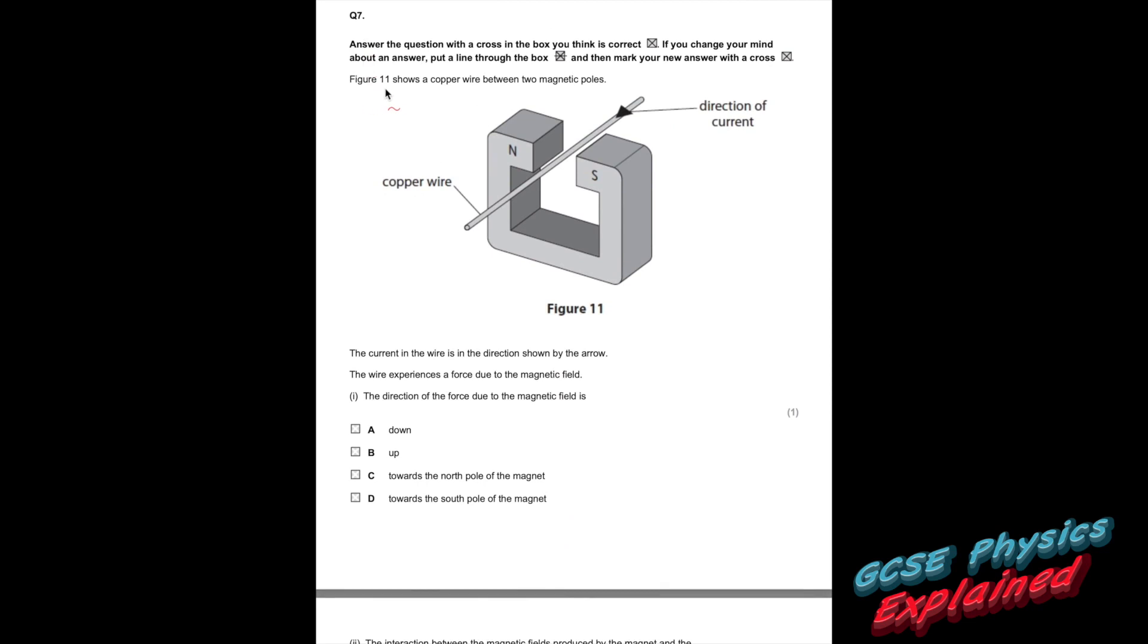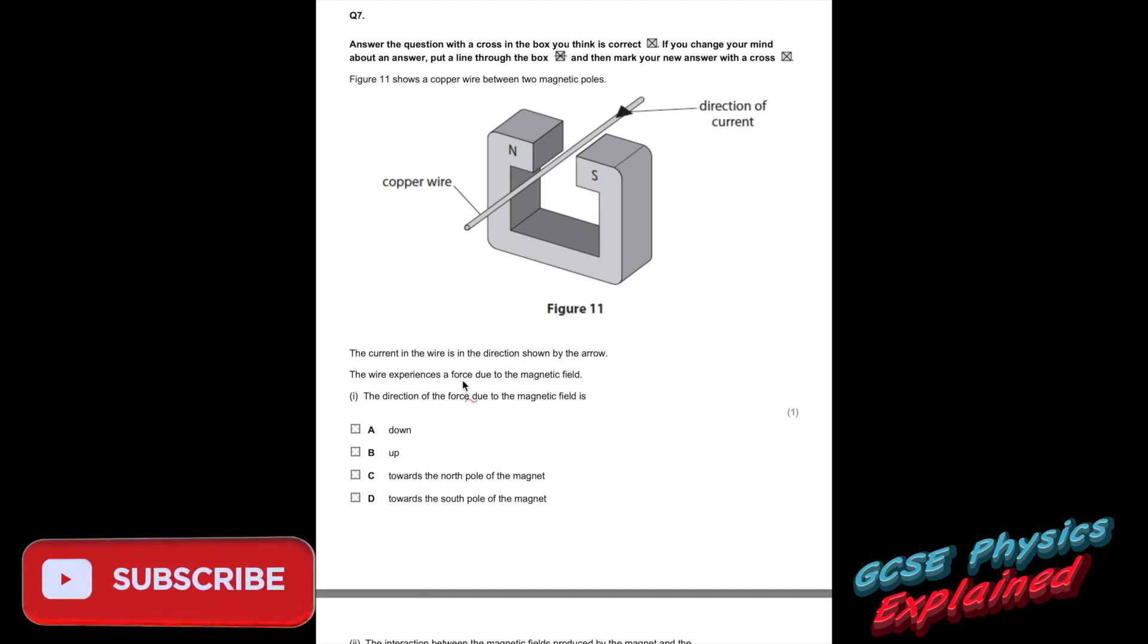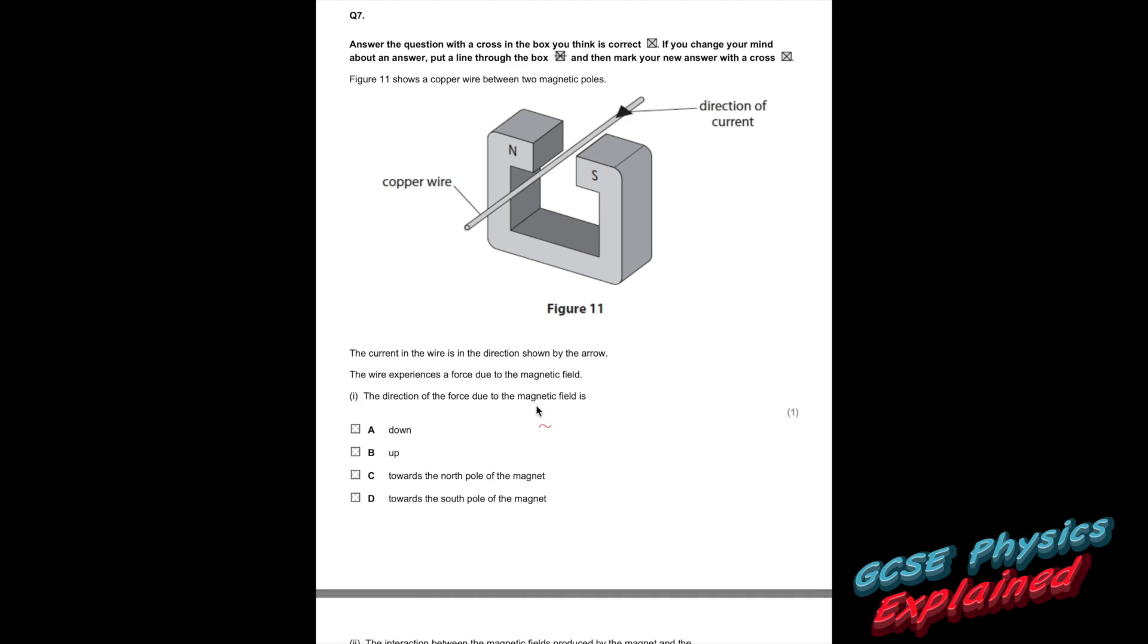Question 7. Figure 11 shows a copper wire between two magnetic poles. The current in the wire is in the direction shown by the arrow. The wire experiences a force due to the magnetic field. The direction of the force due to the magnetic field is... This is Fleming's left hand rule. It's called the motor rule because a motor makes things move.